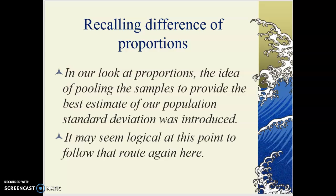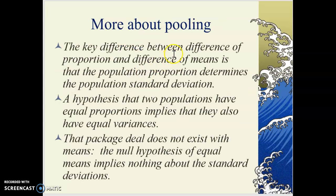When we looked at proportions, we pooled samples to provide the best estimate of our population standard deviation. This was when we assumed the null hypothesis — that the two proportions were the same — to be true. It may seem logical to do the same thing here. But the key difference between proportions and means is that the population proportion itself determined the population standard deviation — the square root of pq over n. So we used the proportion we knew to figure out the standard error. Equal proportions also implies equal variances. That doesn't exist with means.